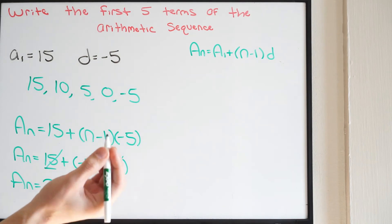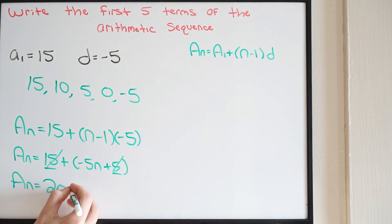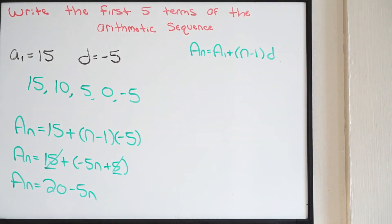So we're done with these. And then just minus 5N. So we can use this following equation to calculate any term in this given sequence.